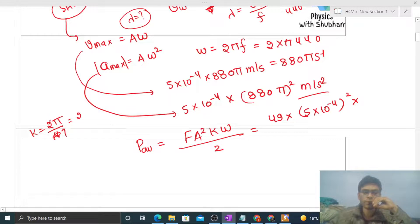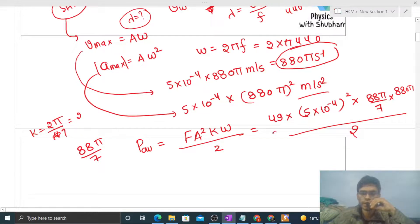Omega we calculated as 880π. So P = (49 × (5×10⁻⁴)² × 88π/7 × 880π)/2. You can calculate this value. This is the average power in SI units, which is watts.